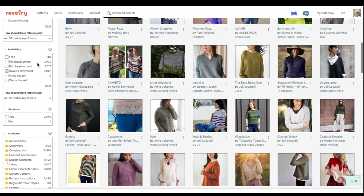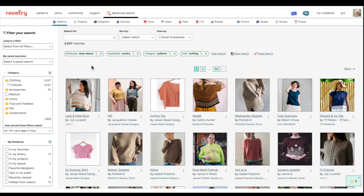Now you can continue to use these attributes over on the left and these filters in order to narrow things down further but that is going to get you started. You can save your search as well so that if you want to try different types of searches you can save those. But that's the very basic starting point of how to find drop shoulder sweaters on Ravelry.